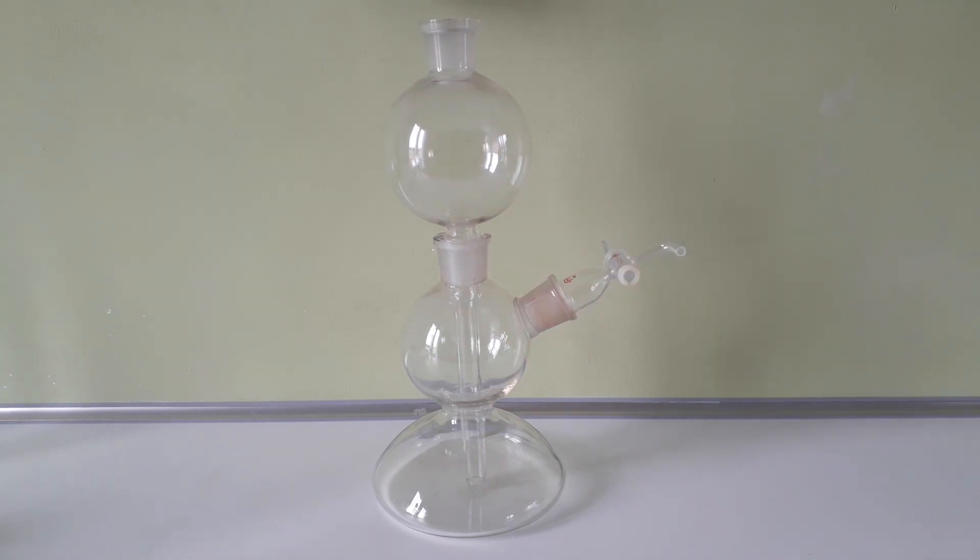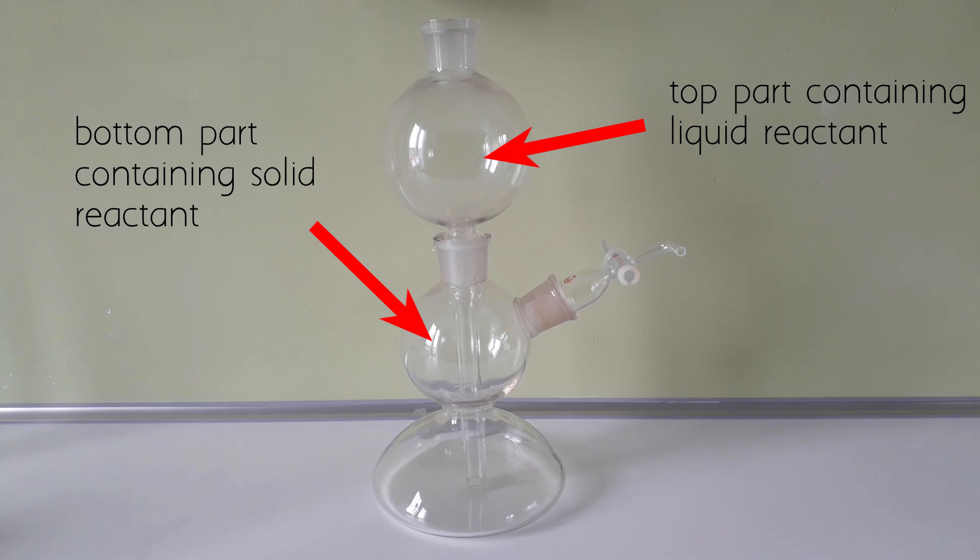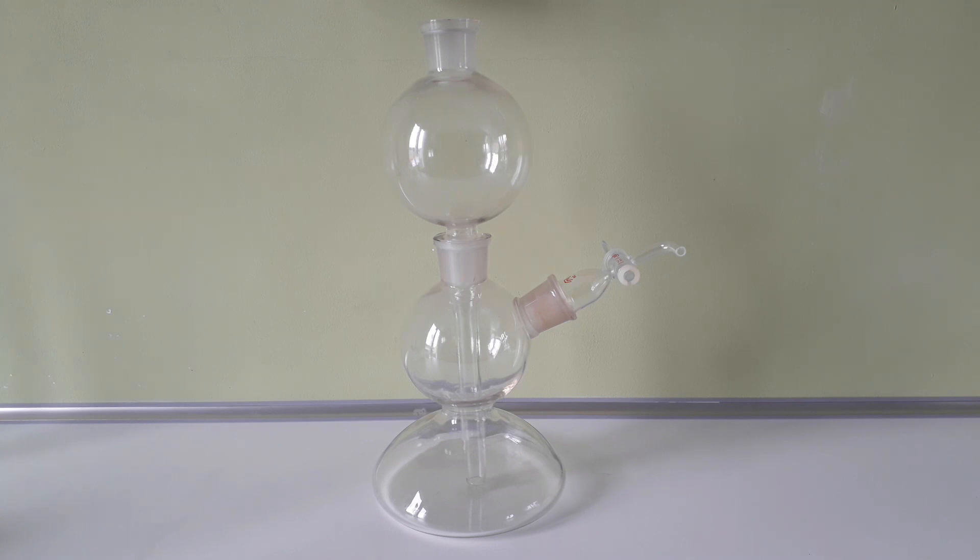It consists of two parts, where the bottom part is charged with a solid reactant, and into the top part is poured a liquid reactant. In this video I am going to demonstrate how it works by making some hydrogen gas and burning it.